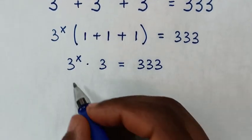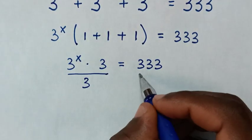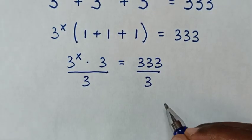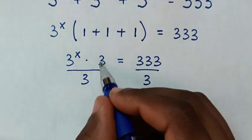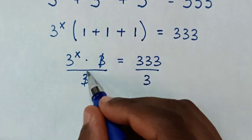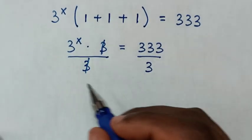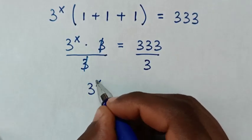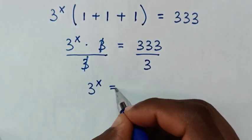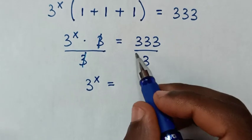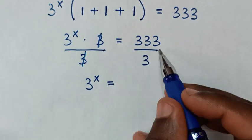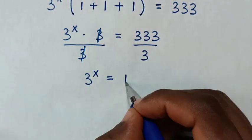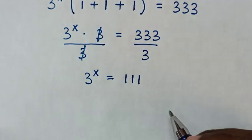Then we divide by 3 on both sides. This and this will cancel, then it will be 3 power x is equal to 333 divided by 3, which is 111.